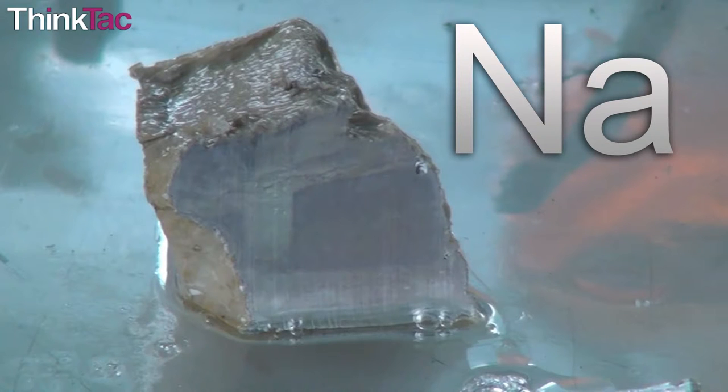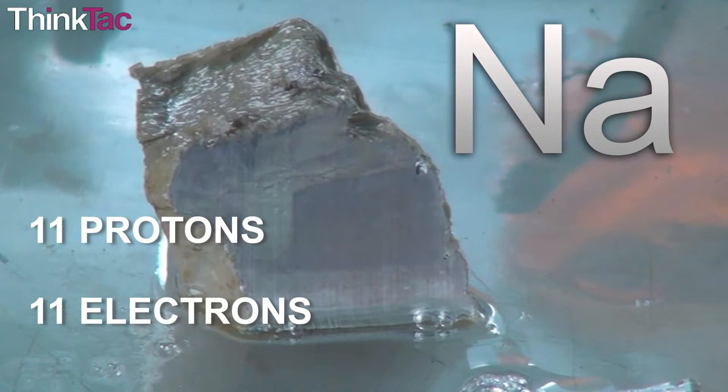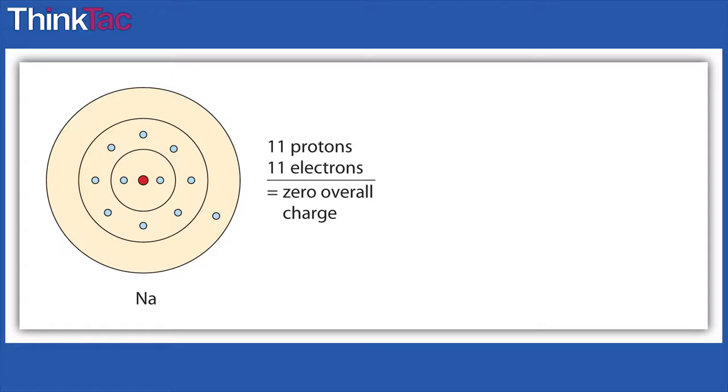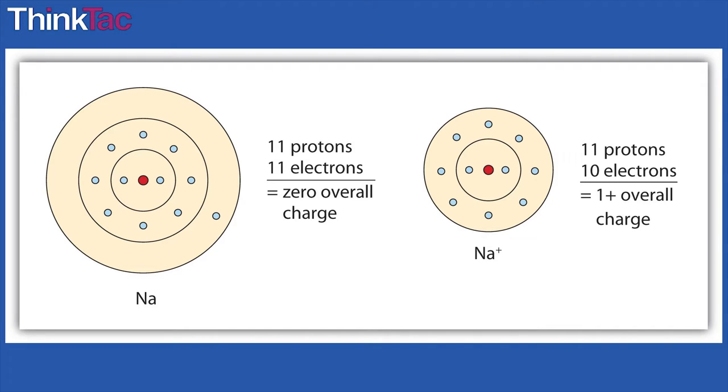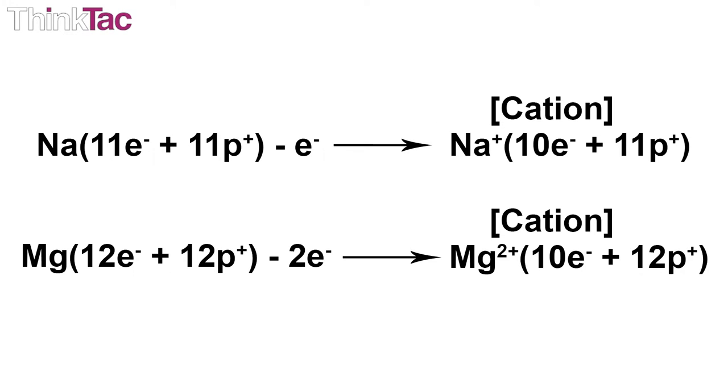For example, sodium has 11 protons and 11 electrons. However, it can easily lose one electron. The resulting cation has 11 protons and 10 electrons. For an overall net charge of plus one, the unit of the charge is electronic charge. The ionic state of an atom or compound is represented by a superscript to the right of the chemical formula. For example, as shown here with Na+ or Mg2+. Note that in the case of 1 plus or 1 minus, the 1 is usually omitted from the nomenclature.